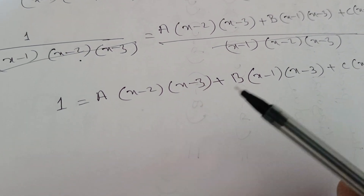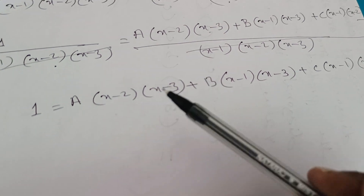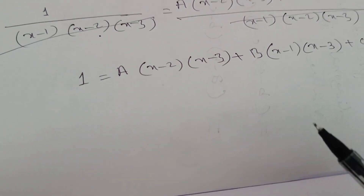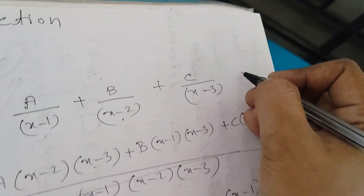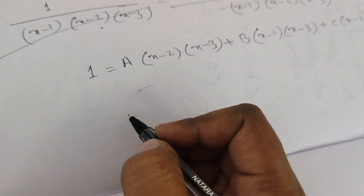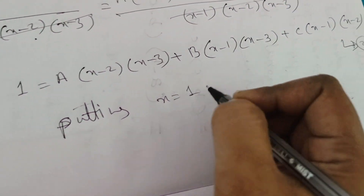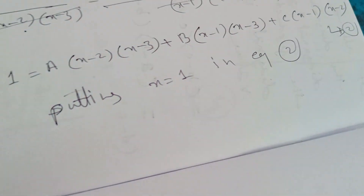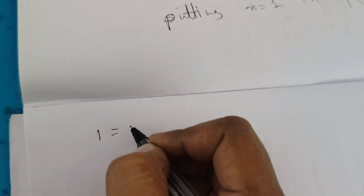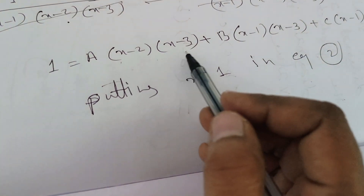The denominators contain (x-1), (x-2), and (x-3), so we substitute x = 1, x = 2, and x = 3 respectively. Equation 1 is the partial fraction form; equation 2 is the numerator equation. Putting x = 1 in equation 2: the left hand side is 1, and wherever x appears we substitute 1.